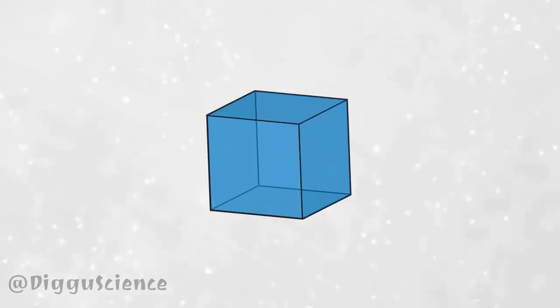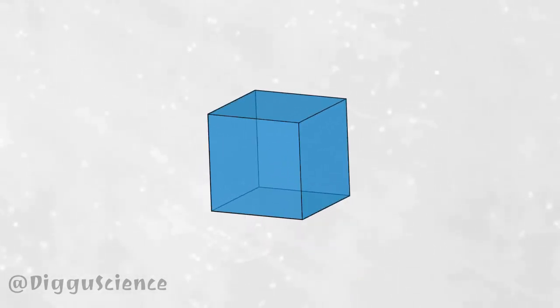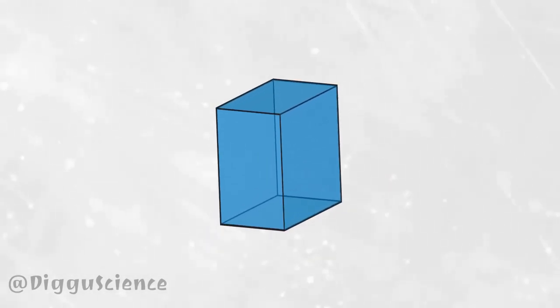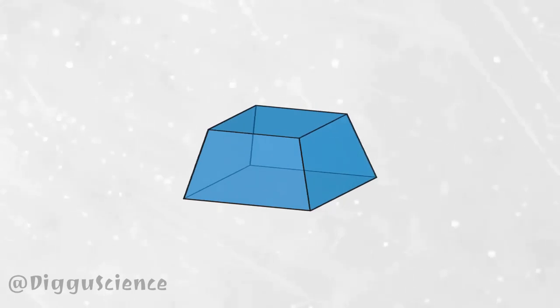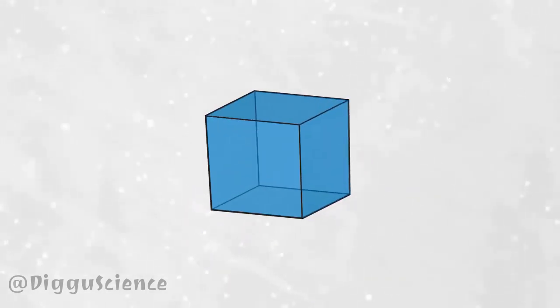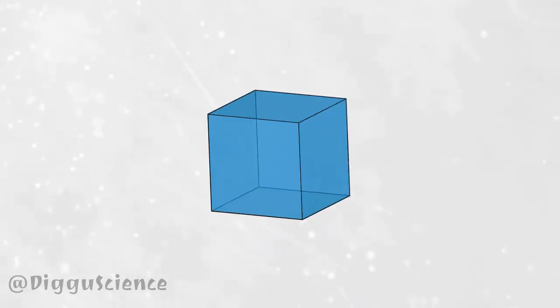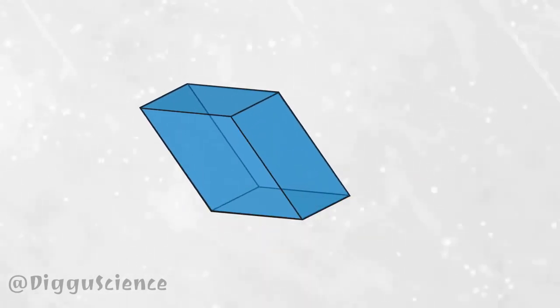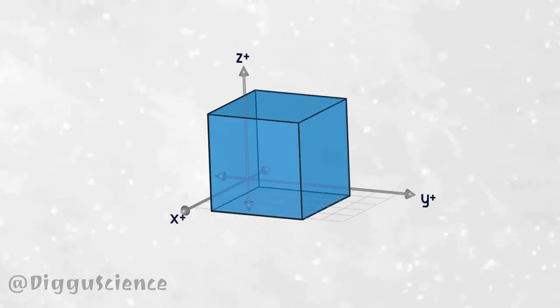This fluid parcel can change shape. There are many different types of shape changes. What would cause the fluid parcel to change shape? Of course, force. A force acting on the surface of a fluid parcel exerts pressure. This pressure is what causes the fluid parcel to change shape.